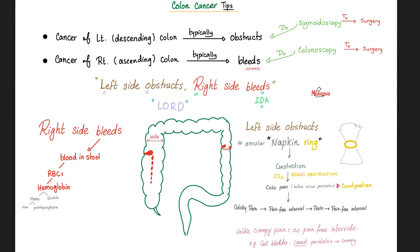Doctors have memorized this for years: left side obstructs, right side bleeds. The left colon or descending colon — when cancer happens here, it obstructs, giving you the classic napkin ring appearance. Why? Because the descending colon is naturally narrower than the ascending colon. The cancer can grow, rotate, and squeeze, obstructing and causing constipation and colic pain. Versus the right side or ascending colon — it's very wide, not going to obstruct, but it can bleed, leading to loss of blood in the stool, bright red stool. When you lose blood, you get anemia. The most common cause of iron deficiency anemia in an old person is gastrointestinal bleeding, such as cancer, until proven otherwise.